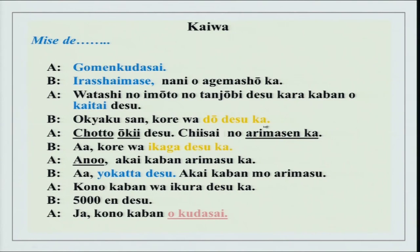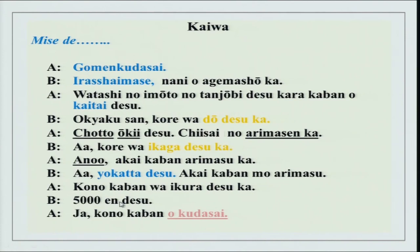Okyakusan, kore wa dou desu ka — how about this one? Chotto ooki desu. Chiisai no arimasen ka — do you have a smaller one? Kore wa ikaga desu ka — how about this one? Ano akai kaban arimasu ka — do you have a red bag? Yokatta desu. Akai kaban mo arimasu — I have a red bag also. Kono kaban wa ikura desu ka? Gosen yen desu. Ja, kono kaban wo kudasai — you have also done this phrase.